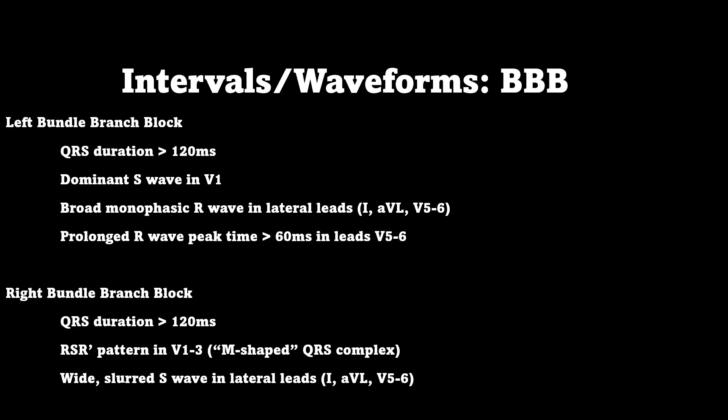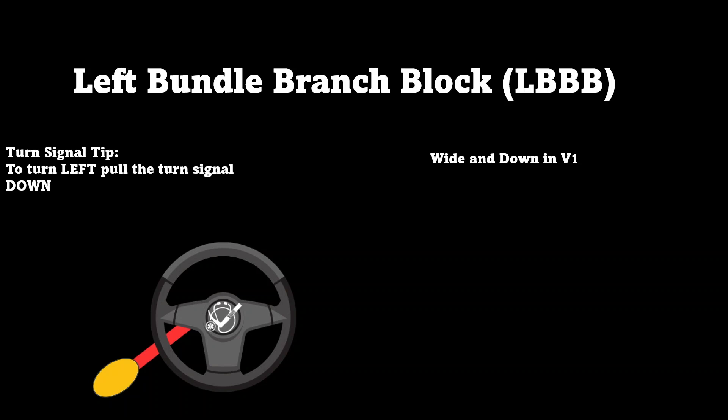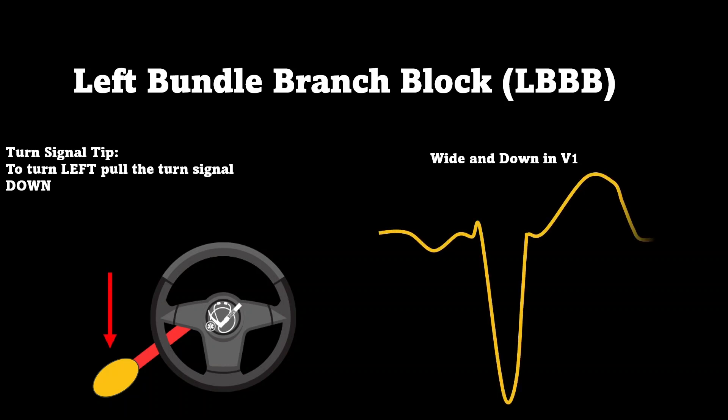This sounds complex, but here's a down-and-dirty easy way of learning your bundle branch blocks using turn signals. When you want to turn left, you pull the stick down. So a left bundle branch block will have a wide, negative QRS in V1. The number one place you look for your bundles is V1 — if the QRS is wide and down, it's a left bundle branch block.